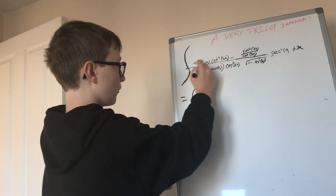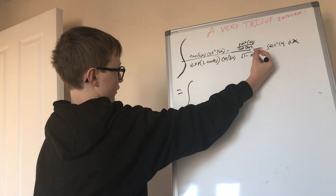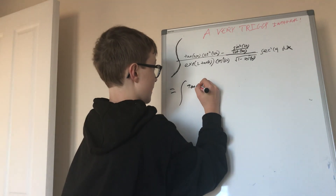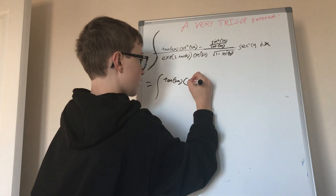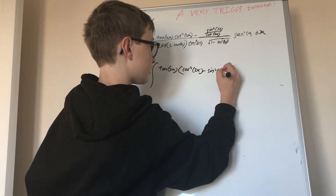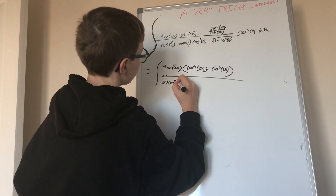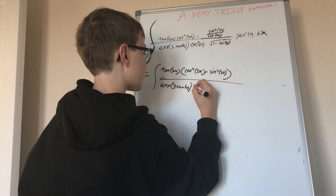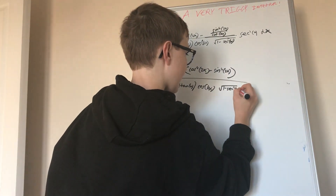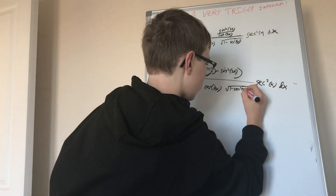This equals the integral of — now let's look at the top. Tangent of 2x is a common factor, because we've just established that this is the same as multiplying by tangent of 2x. So we can factor it out: tangent of 2x times (cosine to the 4th power of 2x minus sine to the 4th power of 2x), all over the exponential function of 2 times tangent x, cosine 4x, square root of (1 minus secant squared x). And then all of this times secant squared 2x dx — sorry, that's a 2x.